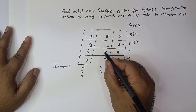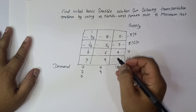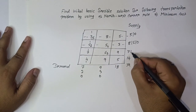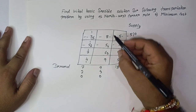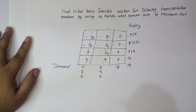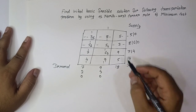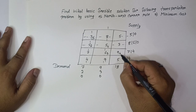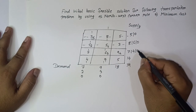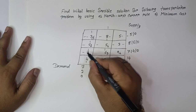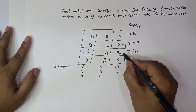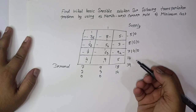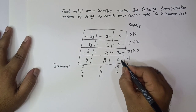The new upper-left corner cell is selected next. We allocate the minimum of supply (7) and demand (3), which is 3. Demand becomes exhausted and supply becomes 4, so we cancel this column. Next we select the cell with value 9 and allocate the minimum of 4 and 18, so 4 is allocated. Supply becomes 0 and demand becomes 14. We cancel this row. Only one column remains, so 14 is allocated there.